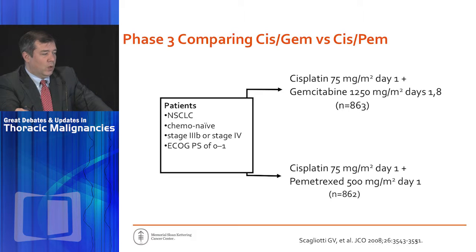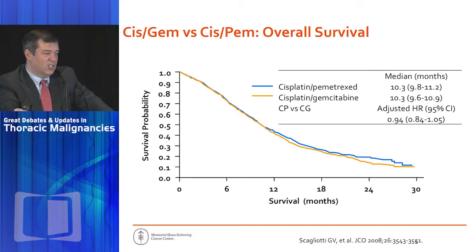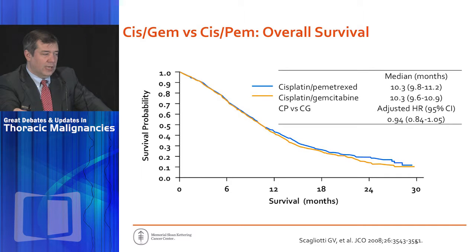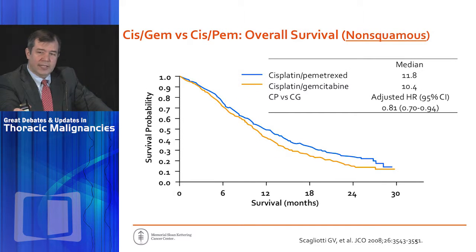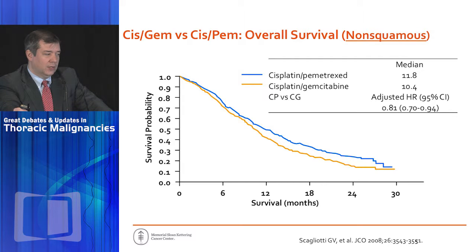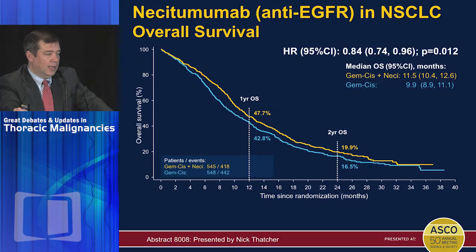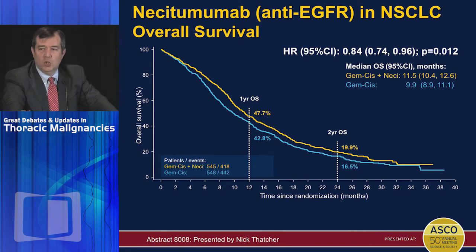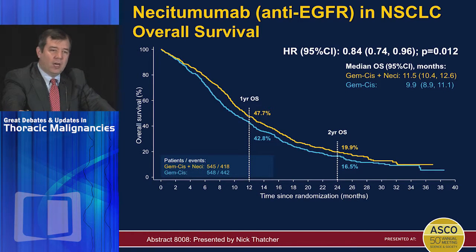Similarly, a worldwide trial compared Gemcitabine-Cisplatin to Cisplatin-Pemetrexed — a so-called non-inferiority trial because neither drug really helped and there was no difference. Those two curves are right on top of each other. Breaking it down by histology, you can find a sliver of a difference, showing Gemcitabine-Cisplatin is inferior to Cisplatin-Pemetrexed in non-squamous histology. Necitumumab added to Gemcitabine-Cisplatin in squamous cell lung cancer again showed very small differences in outcome.